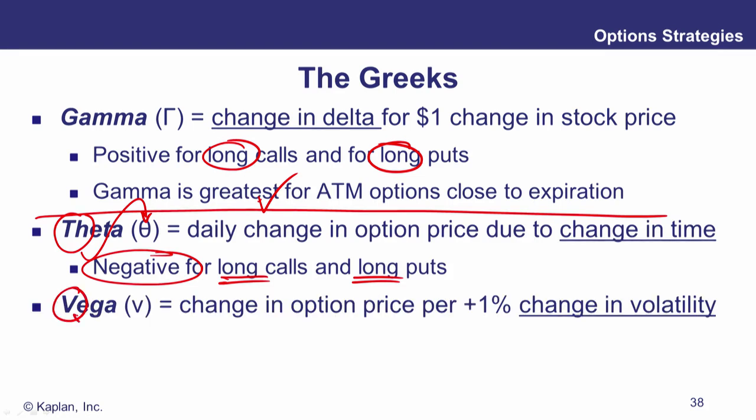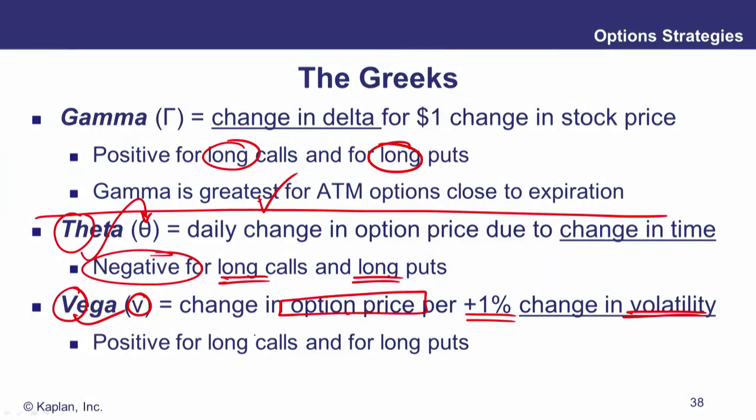Vega — V for vega, V for volatility — not technically a Greek letter, but is your sensitivity of the option premium relative to a 1% change in implied volatility. There's a direct relationship: the more volatile the market expects the underlying asset to be, the higher the implied volatility and the higher the option premium. So positive vega for long calls and long puts.